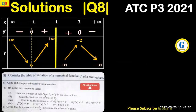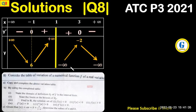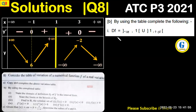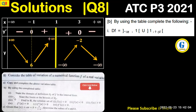Part b says to use the completed table. First, state the domain of definition in interval form. Looking at the table, the domain of definition is from negative infinity to 1 from below, and from 1 from above to positive infinity. We do not include the turning point, so the domain is: negative infinity to 1 from below, union 1 from above to positive infinity.